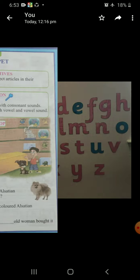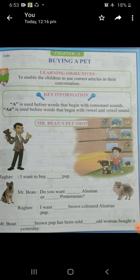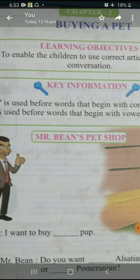So we will start our exercise so that we can understand better. Here, Raghav: I want to buy dash pup. So, after the fill-in-the-blank, the first word is 'pup' and the first letter of pup starts from P. And P is a consonant. So we will put here A.